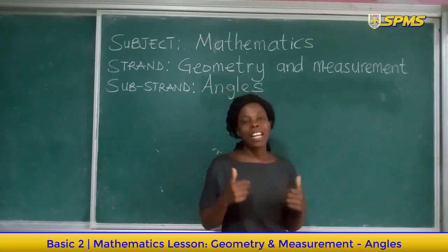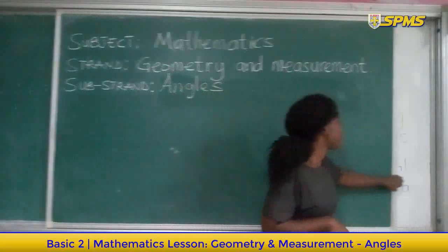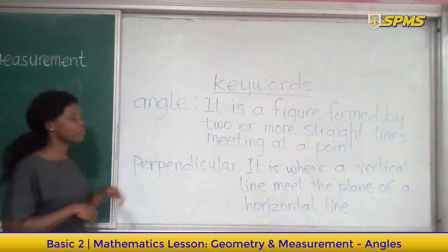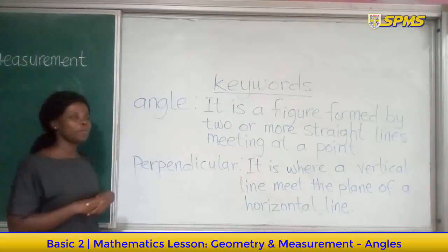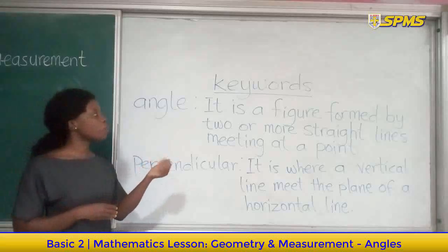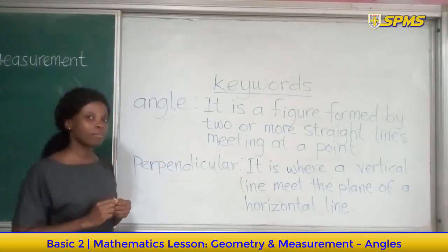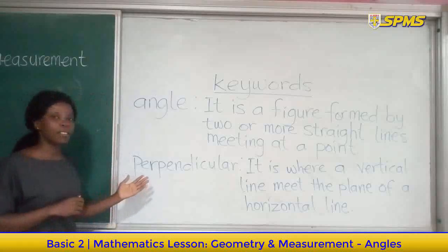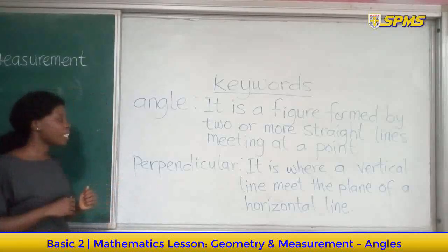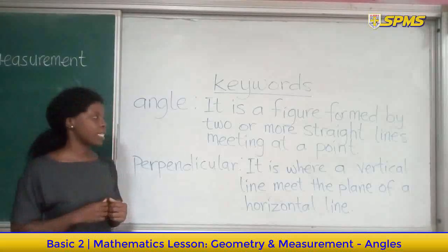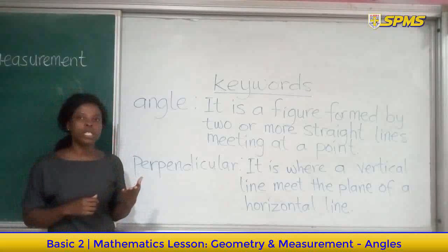Talking about angles, we will meet new words in the course of our lesson. Let's understand them. Angle - what does it mean? It is a figure formed by two or more straight lines meeting at a point. Perpendicular - it is where a vertical line meets the plane of the horizontal line.